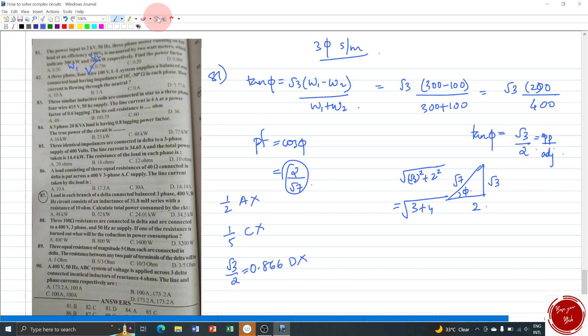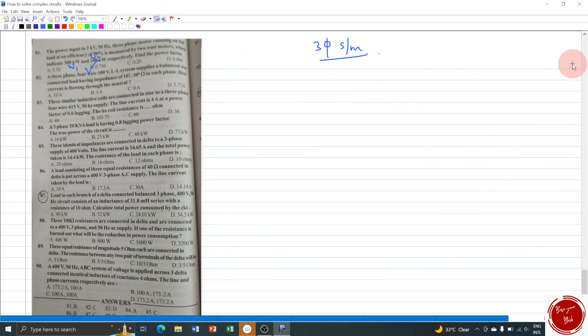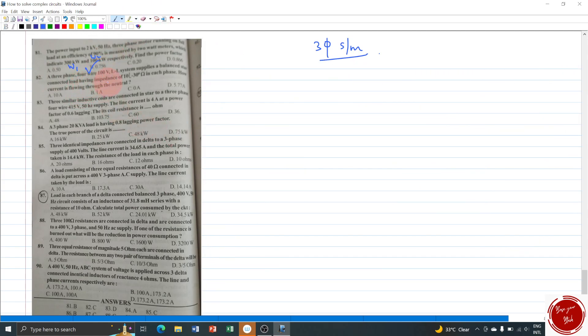Moving on to the next question. Question number 82: A 3 phase 4 wire 100 volt line to line system supplies a balanced star connected load having impedance 10 angle negative 30 degree in each phase. How much current is flowing through the neutral? Here it is given the 3 phase system is supplying a balanced load. So definitely the supplying part will also be balanced in nature. So there will be no current flowing through the neutral. Option C is your right answer since it is a balanced one.